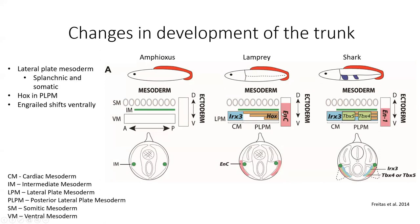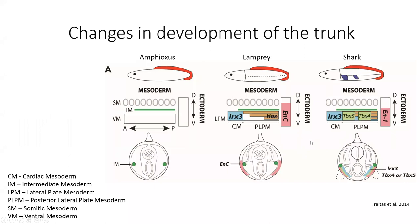Engrailed is originally more dorsal in the ectoderm, and you may recall it was part of dorsal-ventral axis formation in the limbs. In lamprey it's too far dorsal, but in the shark it has actually reached the dorsal-ventral border — precisely where we will get the apical ectodermal ridge forming. We also get TBX4 and TBX5 expression in the lateral plate mesoderm where limb buds will form. All of this is from the previous lecture.